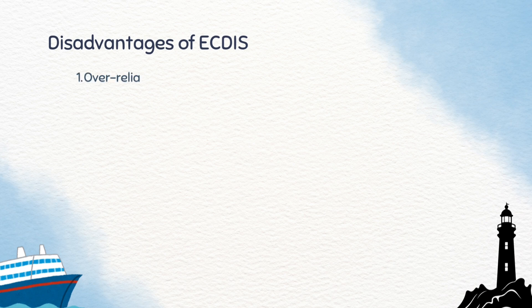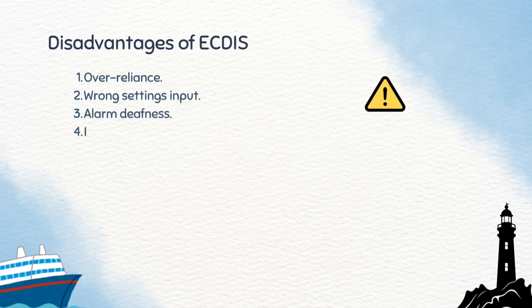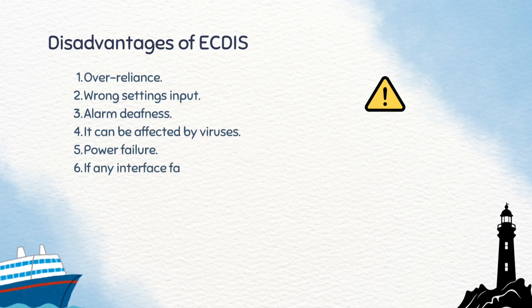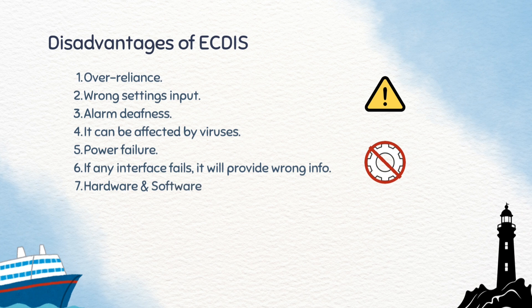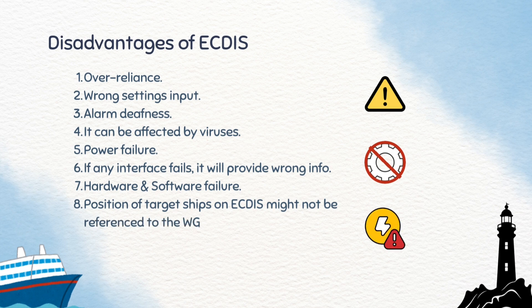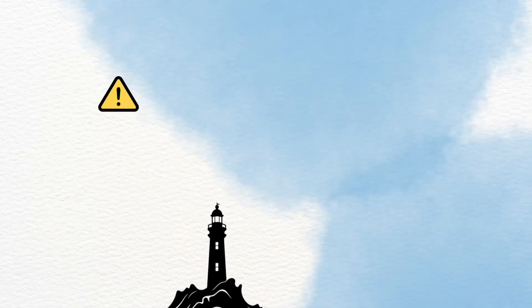Let's go through the disadvantages of EGDIS: over-reliance on the system, errors due to wrong setting input, alarm deafness if too many alarms are ignored, risk of computer virus, power failure or equipment breakdown, incorrect data if an interface fails, hardware and software failure, position of target may not always be referenced correctly to WGS84, and information clutter on the screen.